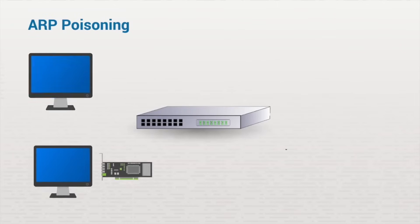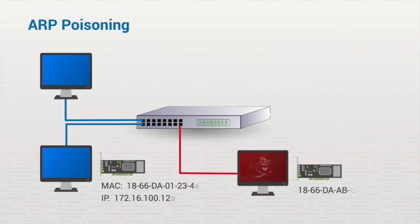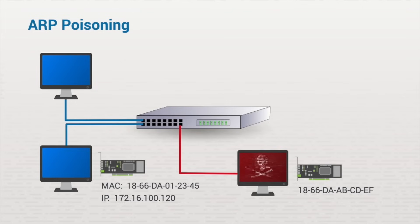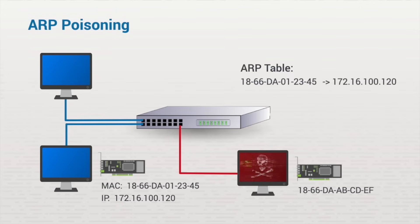The next switch attack is called ARP spoofing, also known as ARP poisoning. But let's first talk about Address Resolution Protocol, or ARP, which works similarly to DNS. DNS resolves a fully qualified domain name into an IP address, while ARP associates a device's MAC address with the IP address assigned to that same device. To aid in this process, a switch creates and stores an ARP table in memory for easy lookup.